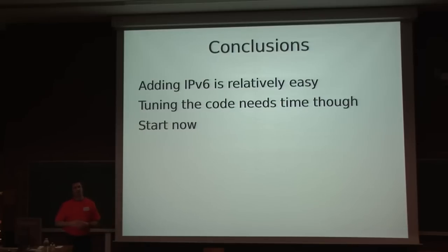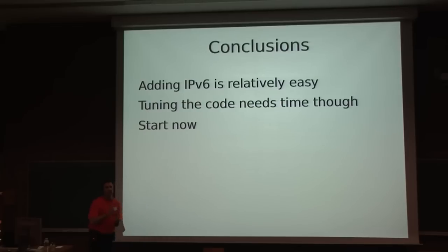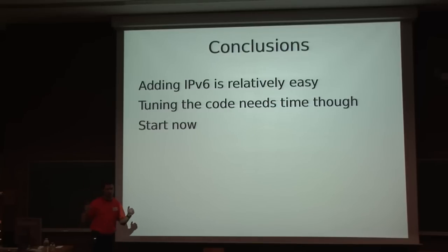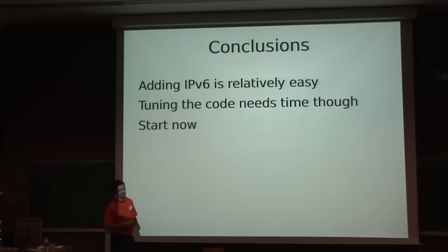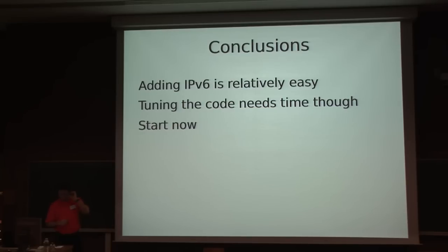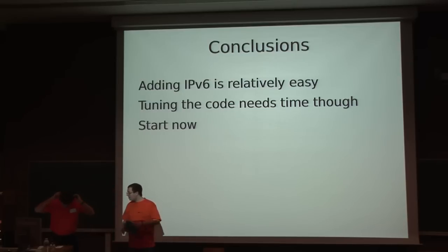On performance benchmarks: getaddrinfo is really hurting quite a lot. For pure static files, I don't have exact data but they should be pretty much the same — protocol-wise there's not a whole lot of overhead, and code-wise the paths are very similar. We use the exact same socket code for v4 and v6, with only minor differences. Thank you very much for your presentation.